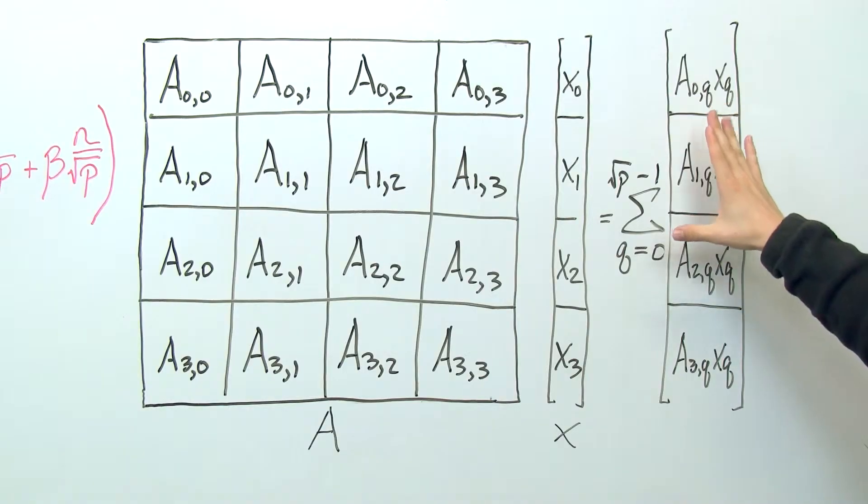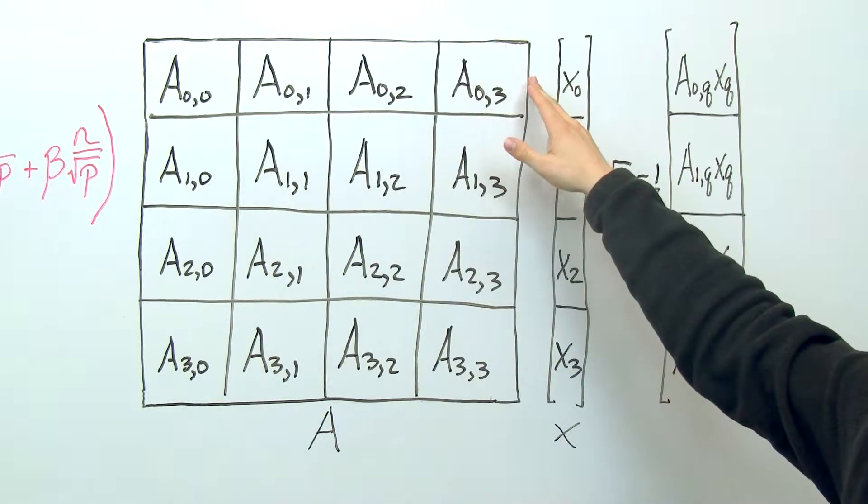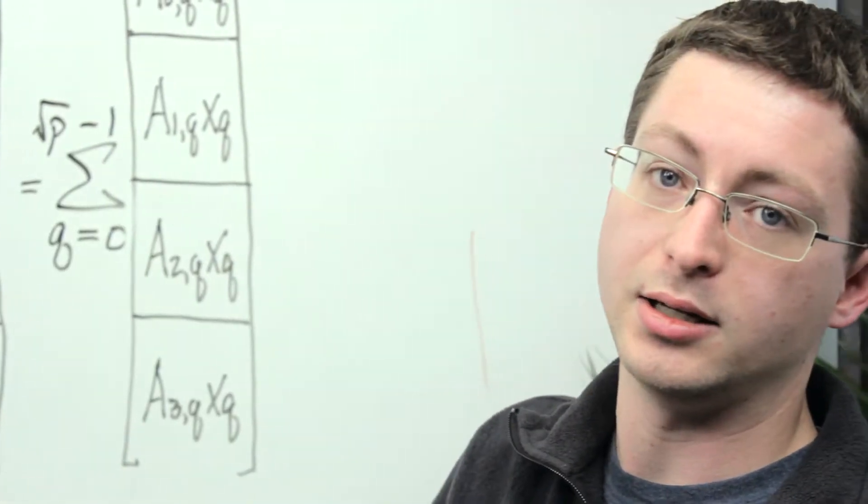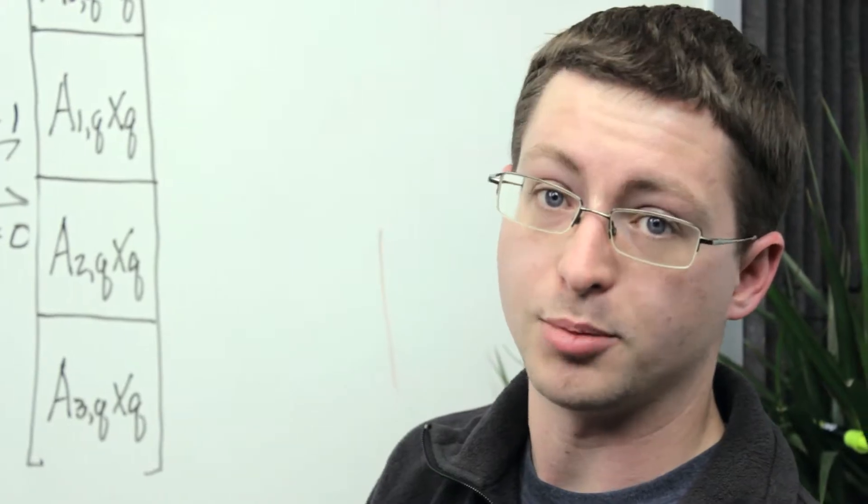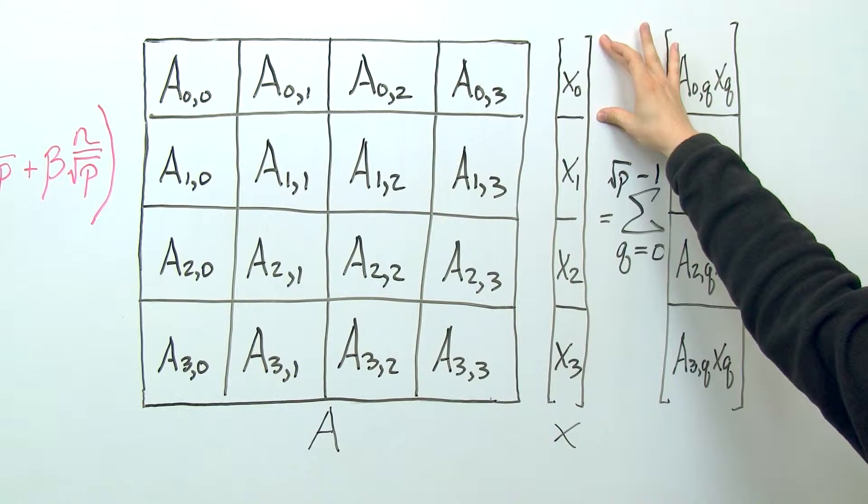Okay, so the communication pattern that needs to happen for, say, these four processes to sum their contributions in order to get the result would be a reduce-scatter operation if we spread the result of this first quarter of x between the four processes.